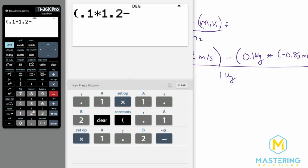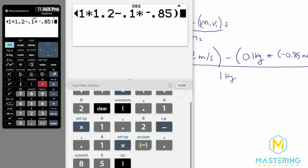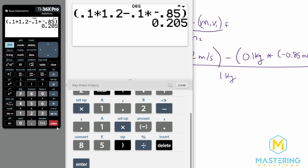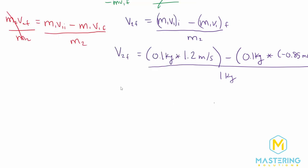So we have 0.1 times 1.2, and that's going to be subtracted by 0.1 times negative 0.85. And then all of that gets divided by 1, but like we talked about, we don't have to do that. So the final velocity of the second cart is equal to V2 final is equal to 0.205 meters per second, and that is in the positive x direction.